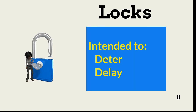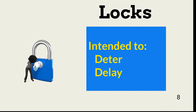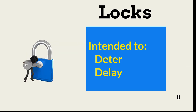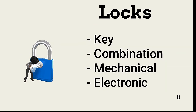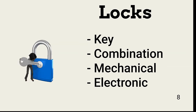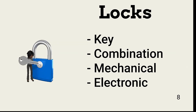The final topic of this lesson is locks. Locks are not a silver bullet — organizations should only use them to deter and delay. The vast majority of locks are easily bypassed via physical picking or electronic bypass. The effort an intruder is willing to spend to bypass a lock depends on the value of the target. Target value is a big consideration when selecting the right lock. For our purposes, we divide locks into four types: key locks, combination locks, mechanical push-button locks, and electronic push-button locks.